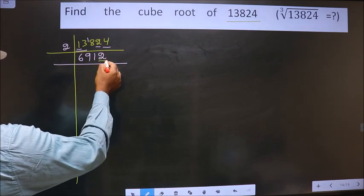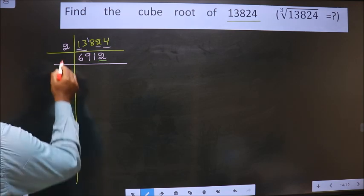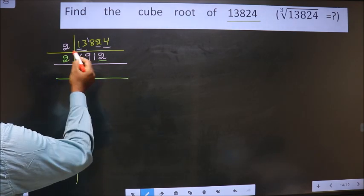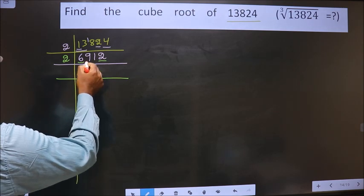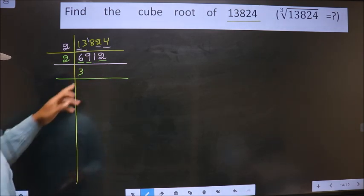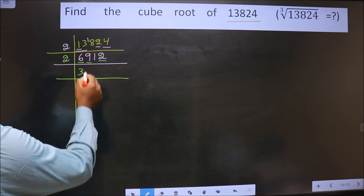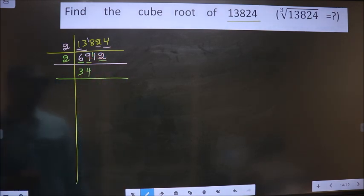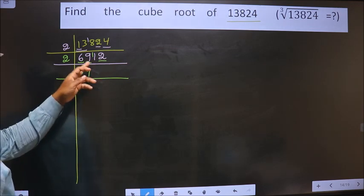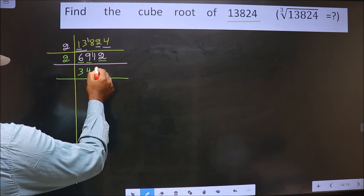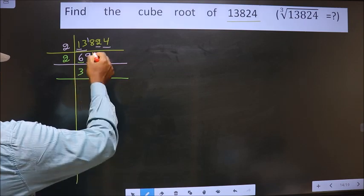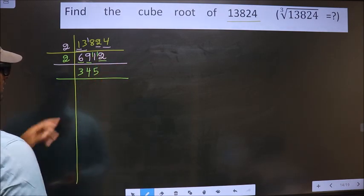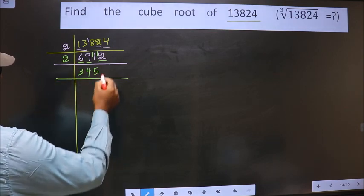For this number, the last digit is 2, which is even, so we take 2. First digit is 6 — 2 threes are 6. Next digit is 9; a number close to 9 in the 2 table is 2×4=8. 9 minus 8 is 1, carried forward making it 11. Close to 11 is 2×5=10. 11 minus 10 is 1, carried forward making 12 — 2 sixes are 12. So 6912 ÷ 2 = 3456.